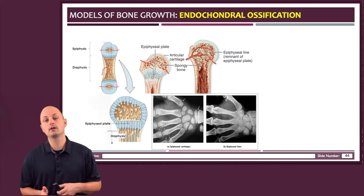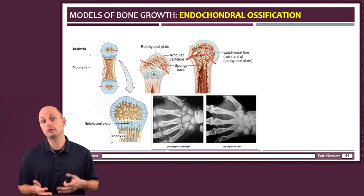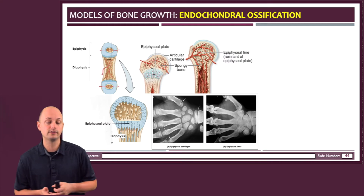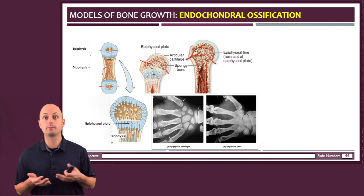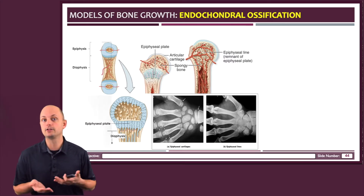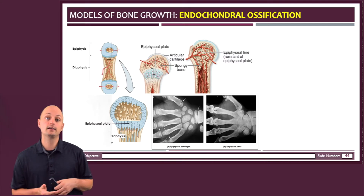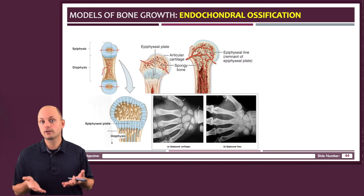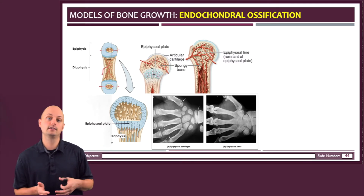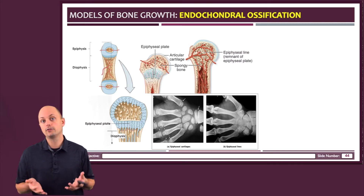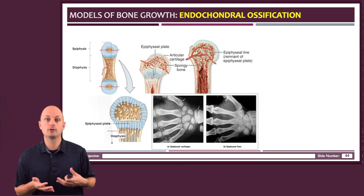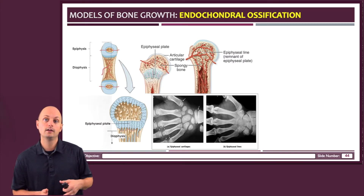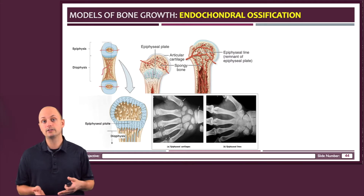As you probably know, bones don't continue to grow for our entire lives. For most people, your bones have stopped growing sometime in your teens. This is because the division of chondrocytes in the metaphysis is hormonally controlled. So as the levels of hormones inside your body change following puberty, the cartilage cells are no longer going through mitosis.